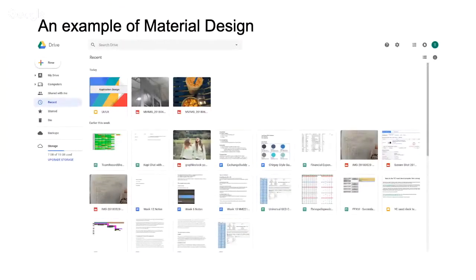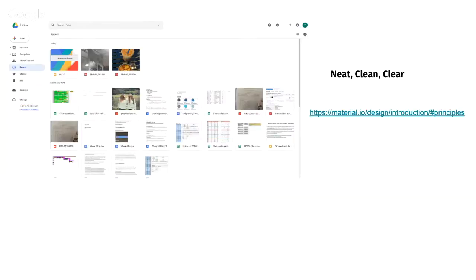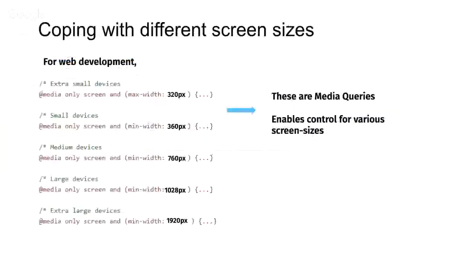This is an example of material design — a lot of you use Google Drive every day and take this fancy card design for granted. Before Google Drive, we didn't really have this kind of design. This is a very good design to follow if you're creating a similar site to Google Drive, YouTube, or other social media sites. Before we move on, we have to talk about different screen sizes. Since there are different screen sizes, we have to learn how to cope with them. Let me digress a bit from the UI side to the front-end development side.